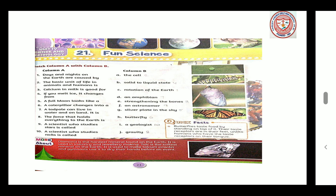Number 9: A scientist who studies stars is called an astronomer. Number 10: A scientist who studies rocks is called a geologist.